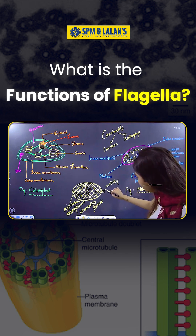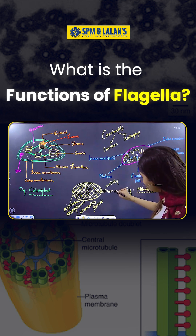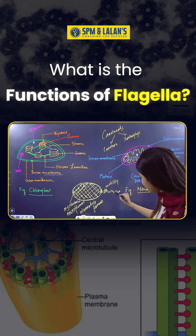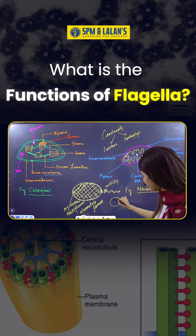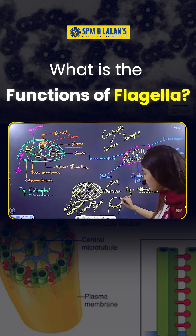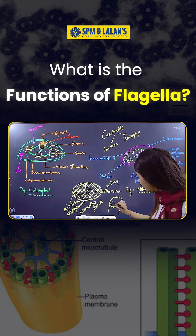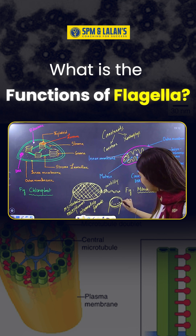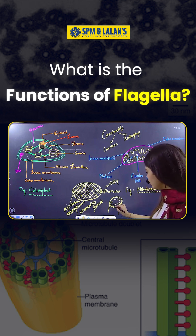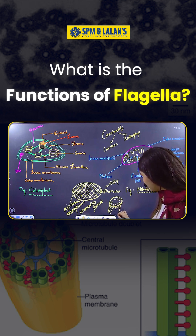So, when we see a flagellum, suppose I will cut the flagellum and cut the section. It is a circular section. So, a circular section has got structure. They are parallel. They are circular or not.